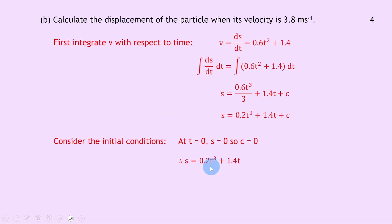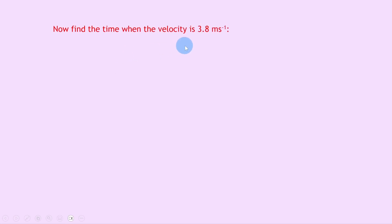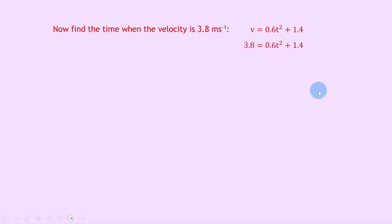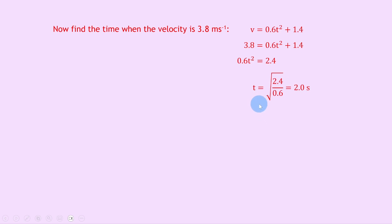We don't know t yet, so we need to find the time when velocity equals 3.8 m/s. Taking our expression from part a, v equals 0.6t squared plus 1.4, and setting v equal to 3.8: 3.8 equals 0.6t squared plus 1.4. Subtracting 1.4 gives 0.6t squared equals 2.4. Dividing by 0.6 gives t squared equals 4, and taking the square root gives t equals the square root of 2.4 divided by 0.6, which is 2.0 seconds.